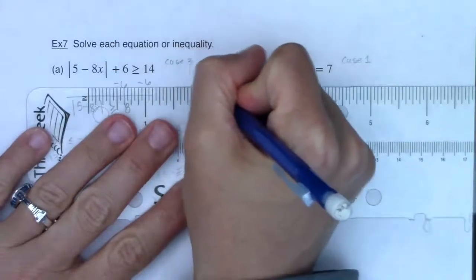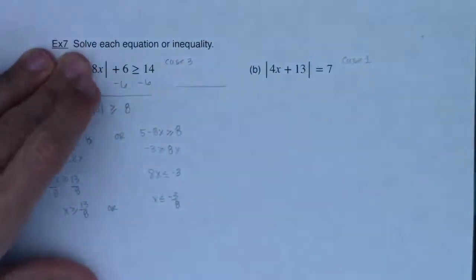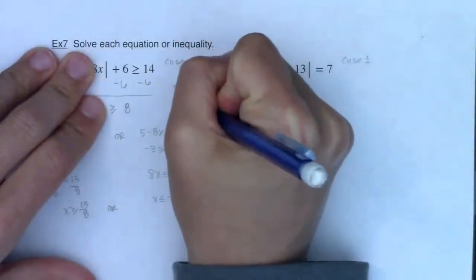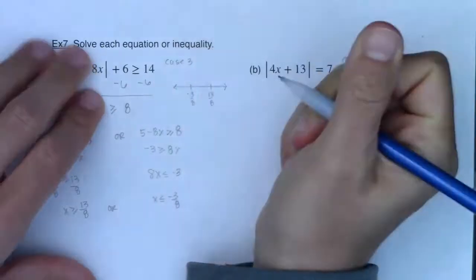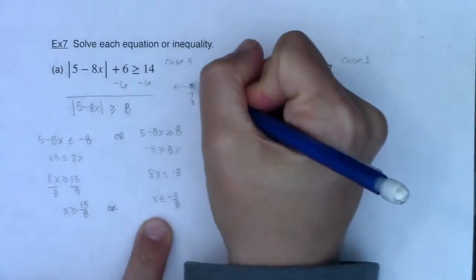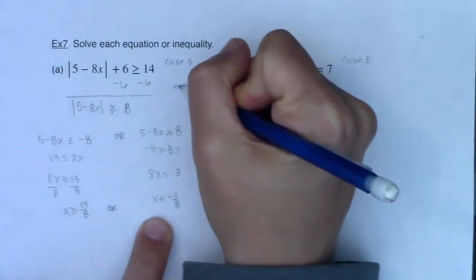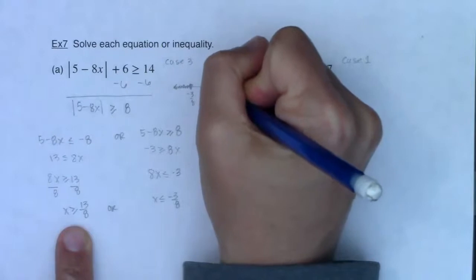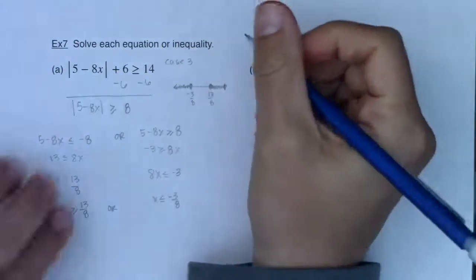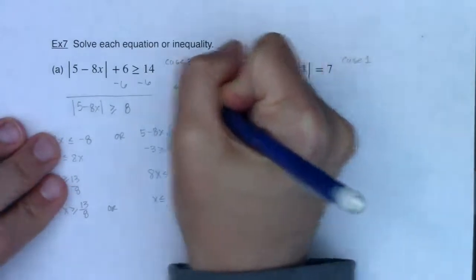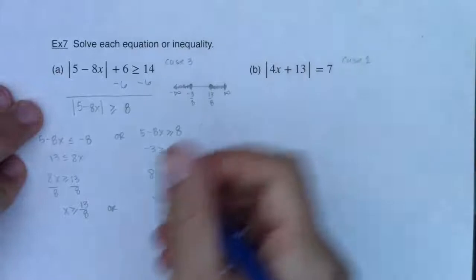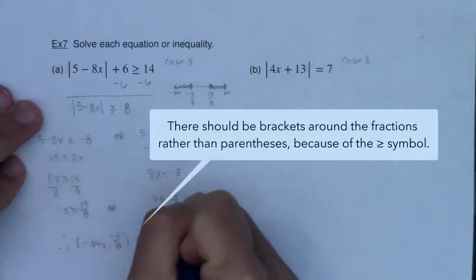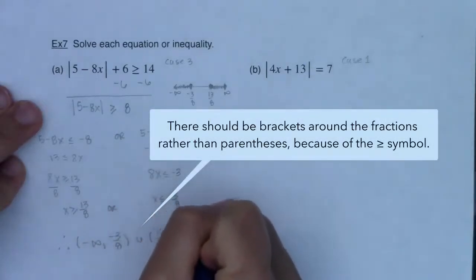On the number line I'd place negative 3/8 and positive 13/8. For less than or equal to negative 3/8, I fill in the circle and shade all the way to the left. For greater than or equal to 13/8, I fill in the circle and shade all the way to the right — going toward negative infinity on the left and positive infinity on the right. In interval notation: negative infinity to negative 3/8, union 13/8 to positive infinity.